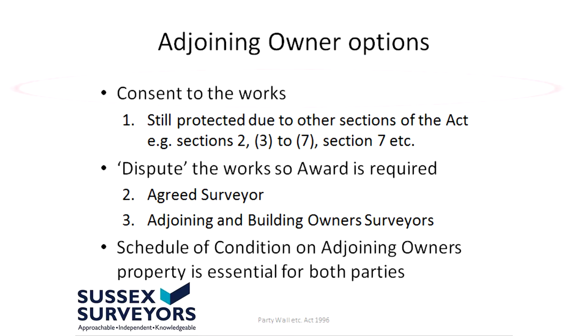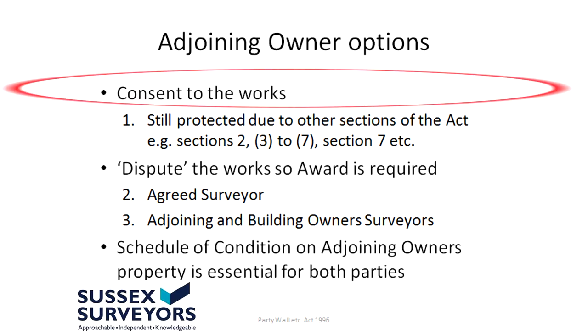The first is you can consent to the works. I often hear people say, oh, but if I consent to the works and damage occurs, they won't have to repair my property. That's not the case. There are provisions within the Act — for instance, subsections three to seven of section two — which outline how repairs have to be made to your property. And there's also a catch-all with section seven of the Act, which doesn't just stop at repairs having to be made, but also includes any losses that occur.